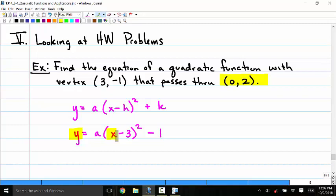I can plug in 0 for X and 2 for Y and solve for A. So let's do that. I get 2 equals A times (0 minus 3) squared minus 1.